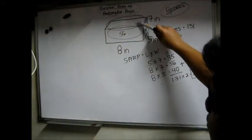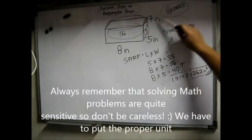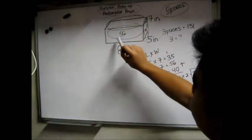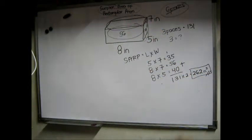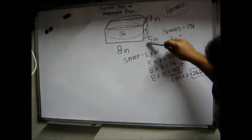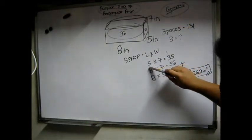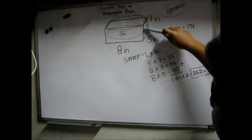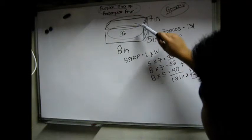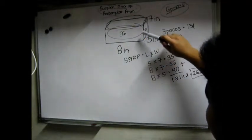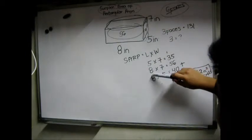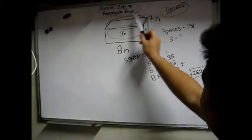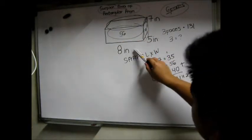This is a rectangular prism. Six faces: first face, second face, third face, fourth face, fifth face, sixth face. The first face area, the length is 5, the width is 7, so 5 multiplied by 7 equals 35. The second face, which is here, 8 is the length and 7 is the width, 8 multiplied by 7 equals 56.